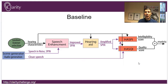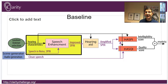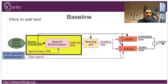So that's what we're looking for you to do. The key part we want you to work on is the bright yellow block: take the hearing characteristics, take the speech and noise, suppress the noise, and enhance the speech. Everything else is either supplied by us or fixed.